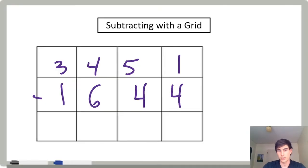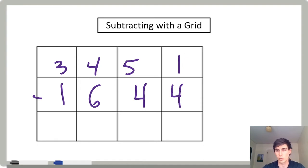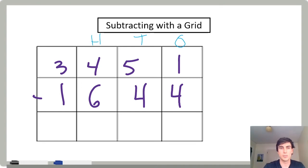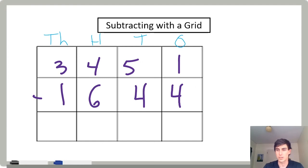Let's try subtracting with a grid. The grid is going to help us line up our place value and help us regroup. Let's start with 3,451 minus 1,644. I know this is going to be the ones place, the tens place, the hundreds place, and the thousands place. Let's start subtracting.